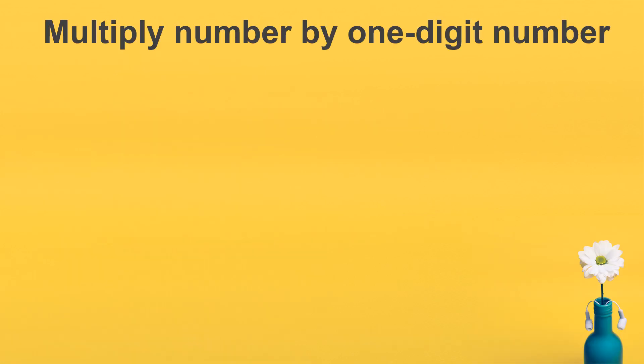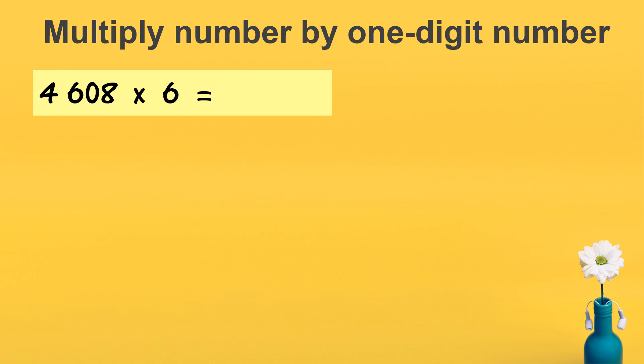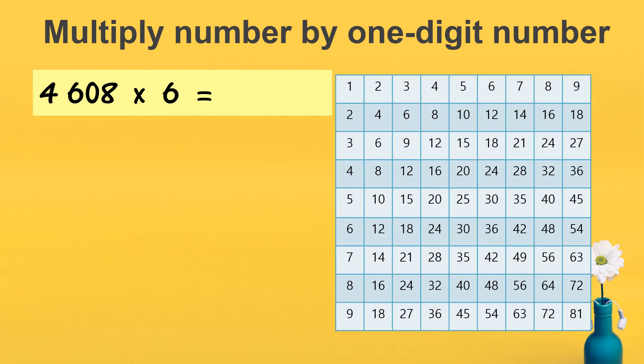Multiply a number by a one-digit number. For example, 4,608 times 6. So if you want to multiply, you have to remember this. You need to write in the vertical form — tulis dalam bentuk lazim.